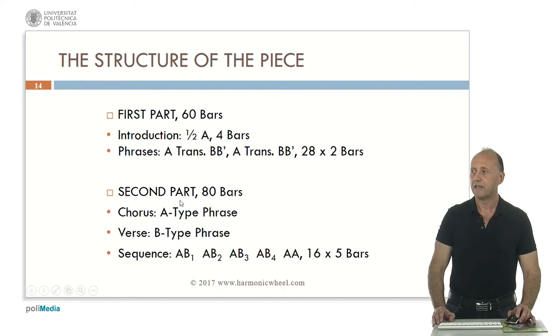And then a second part with 80 bars with the structure chorus verse. The chorus will be an A type phrase and the verse a B type phrase. The sequence will be chorus verse four times and the song will end with two choruses. The melody in the verses will change so we call them B1, B2, B3, B4.